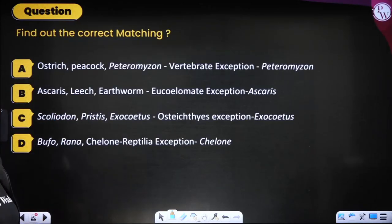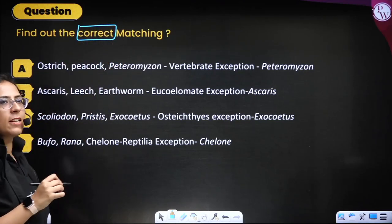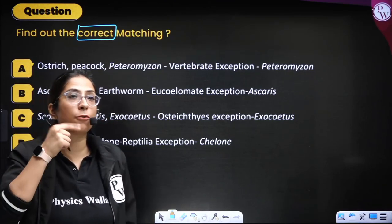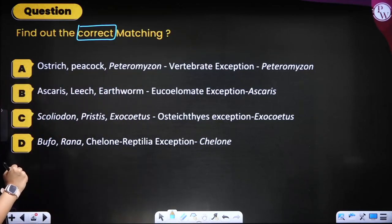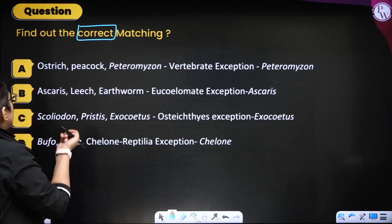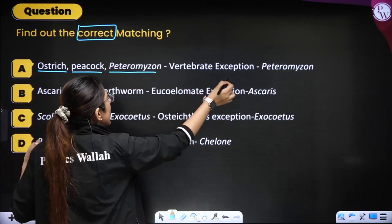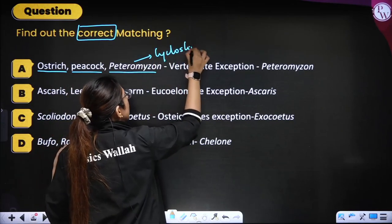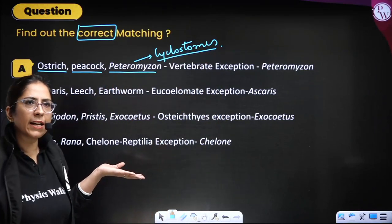Next question: find the correct matching. Again, make a box around the word 'correct' or 'incorrect' so you know what to look for. First option: ostrich, peacock, pteromyzon — they are saying all are vertebrates, with pteromyzon as an exception. No — pteromyzon is a cyclostome, a jawless vertebrate. This is incorrect.